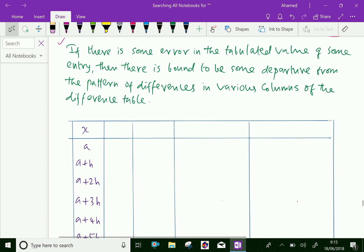If there is some error in the tabulated value of some entry, then there is bound to be some departure from the pattern of differences in various columns of the difference table.